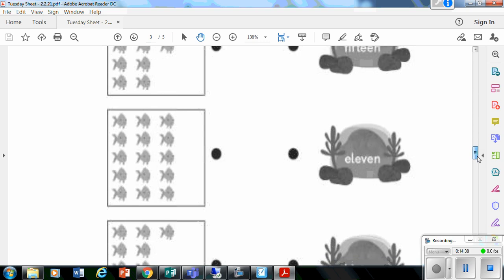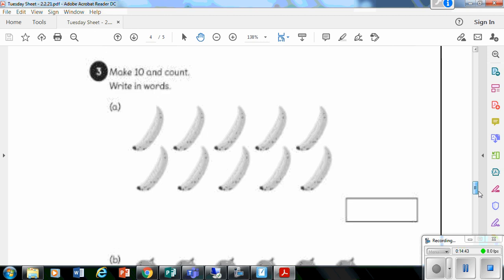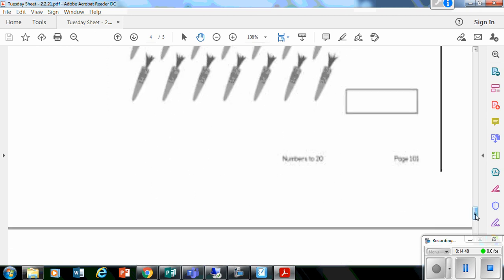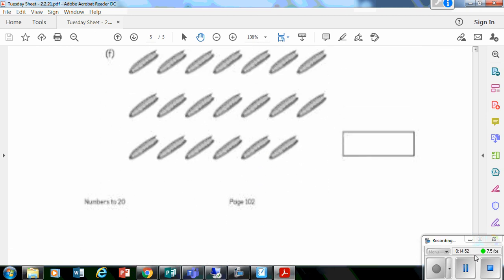Okay. And once you've done that, there is one more little sheet left. You make your 10, count on, and write the number in words in the box here. Okay. So that's your third sheet. And then you are done for today.